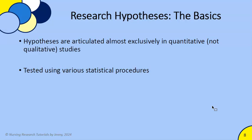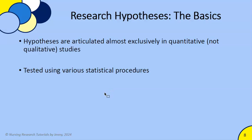Hypotheses are typically exclusively used in quantitative research, mostly because hypotheses state relationships or proposed relationships between variables. Variables indicate we're measuring something numerically and those relationships are tested by statistics — so that's quantitative. The only exception is if there's some sort of mixed methods study that pairs both quantitative and qualitative together. In that case, you might see qualitative elements alongside hypotheses, but the hypotheses are connected to the quantitative part of the study.